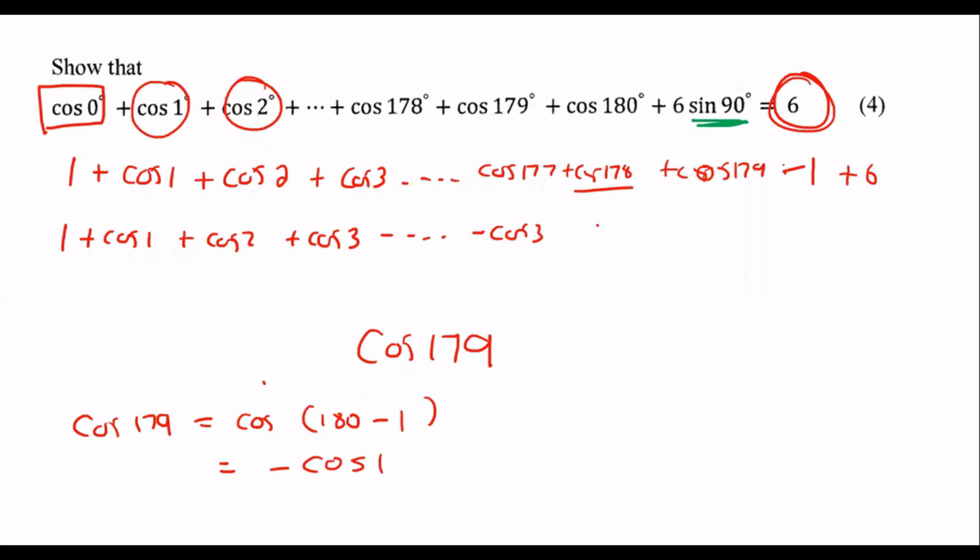Cos 179 would become negative cos 1 and then we have negative 1 plus 6. So guys I'm sure you can see what's happening already. These two over here cancel.